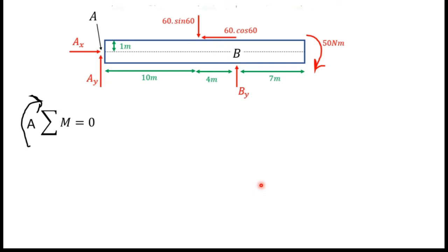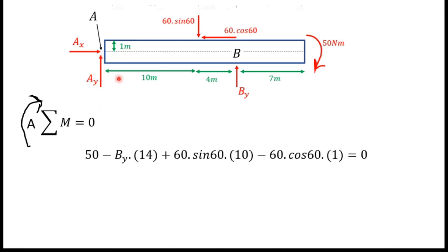Then I will take the sum of moments. I will take moments about point A, and the positive direction is clockwise. When we take moments, first I write 50 Newton-meters — its direction is clockwise, so I write plus 50.